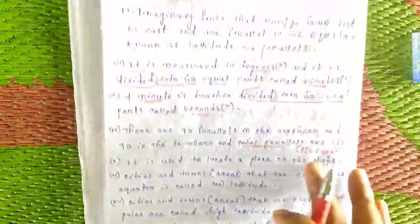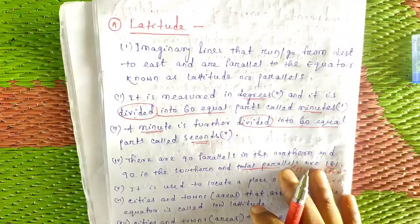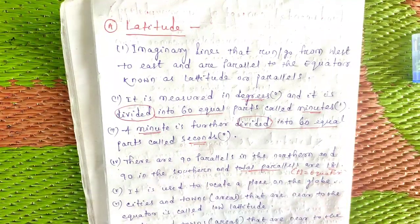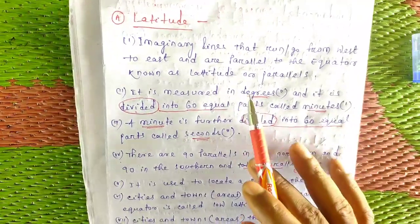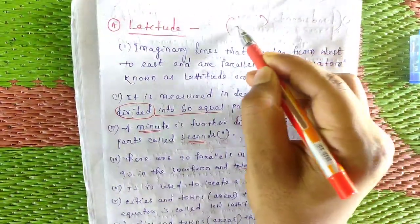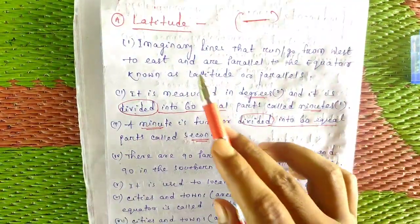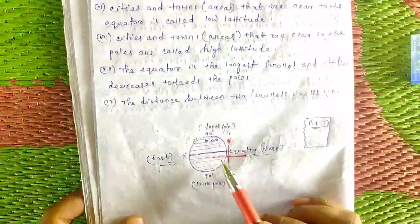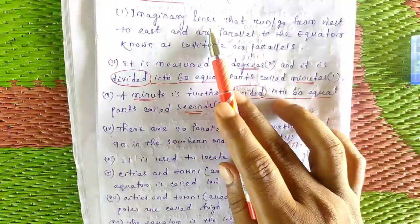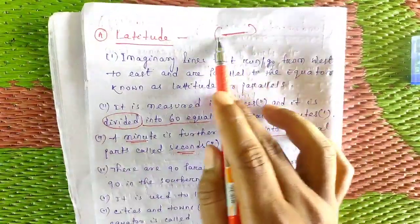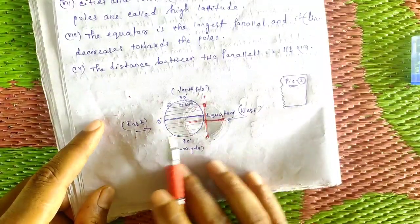Latitude is very important. I hope you will get the details of latitude and longitude clearly. Now we start with latitude. Latitude means an imaginary line. If you look at the diagram, you will see that the imaginary line runs from west to east.